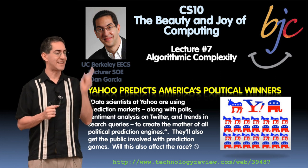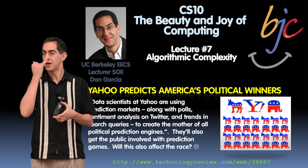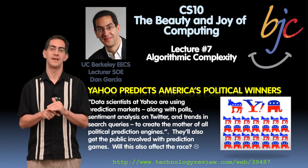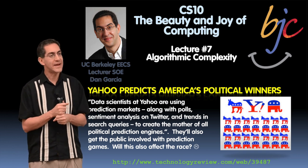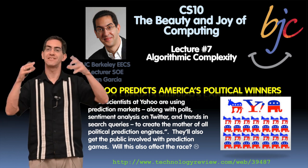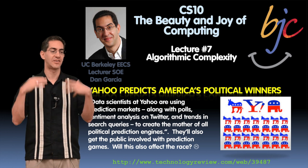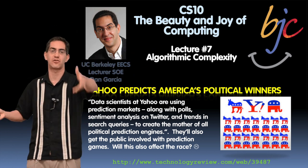So today's topic is algorithmic complexity. But we're going to start with the technology in the news in which we talk about Yahoo. They have a system in which they think they can pull data from lots of different places and make the world's smartest political predictor by taking Twitter feeds and trends on search queries.